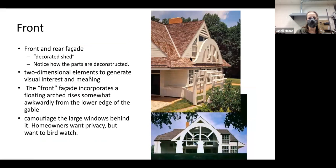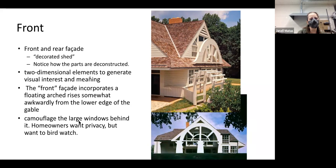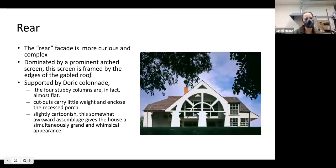The front and rear function almost like decorated sheds — they look separate from the main structure of the house, giving it a deconstructed quality. The two-dimensional elements generate visual interest and meaning. The front facade incorporates a floating arch that provides the privacy needed for bird-watching. The rear has flat Doric columns which feel a little cartoonish and very artificial — that's that mannerist quality, making it feel whimsical.